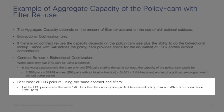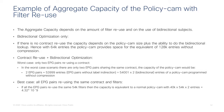Now let's look at the best case. Imagine every single EPG pair uses the exact same set of filters. If all 40k EPG pairs reuse the same 54,000 filters, this is equivalent to having a policy cam capable of holding 4.32 billion entries. This is of course unrealistic, but looking at the theoretical best case, policy cam reuse is indeed a very useful compression feature.